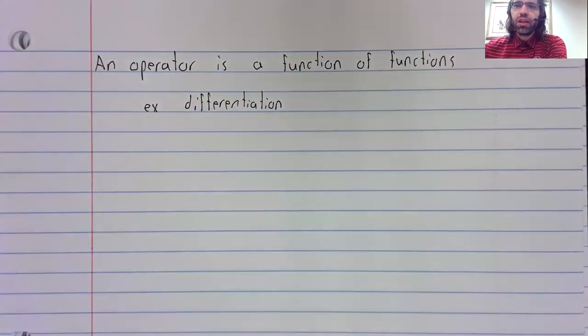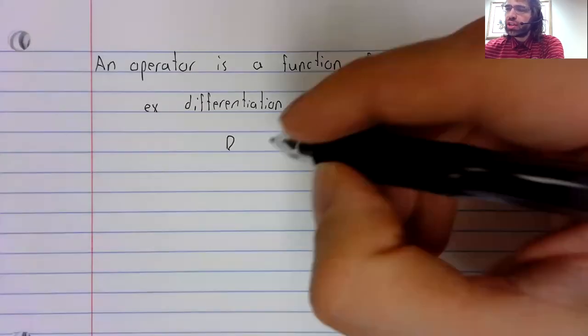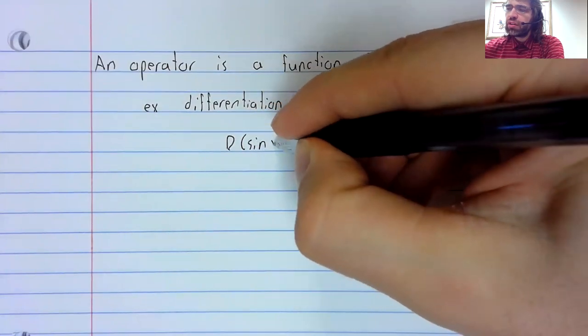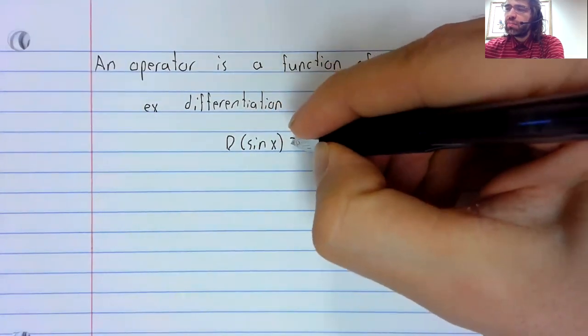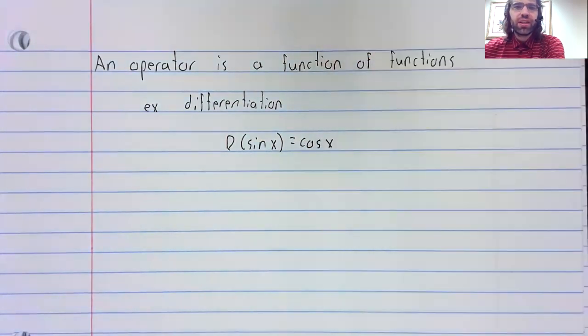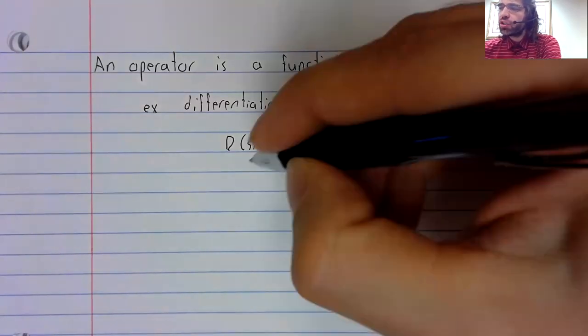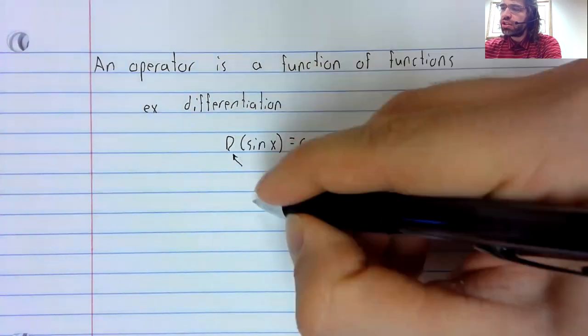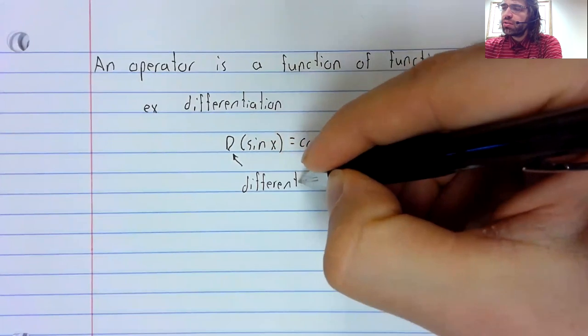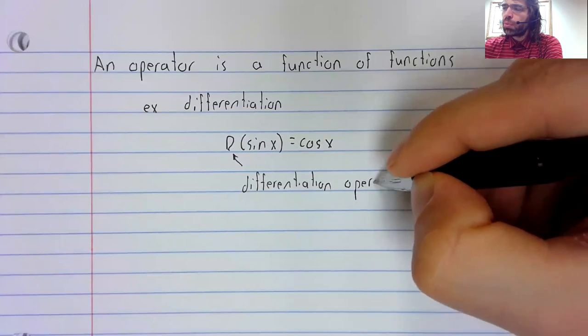You can think of differentiation as a function. The statement that the derivative of the sine is the cosine, for example, can be written like this, using function notation, where D is the differentiation operator.